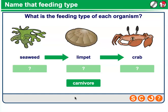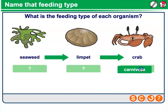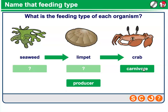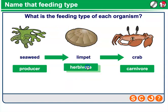Let's name the feeding type in another example. We've got seaweed, or potentially more of a kelp here. We've got a limpet and a crab. The crab is going to be the carnivore, consuming another consumer. Our kelp or seaweed is going to be the producer, going through photosynthesis to make glucose. And then the limpet is going to be the herbivore, eating that kelp or seaweed.